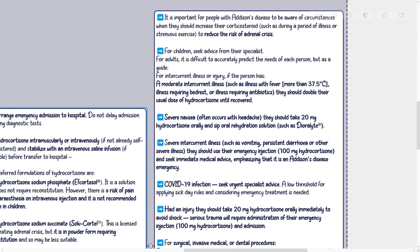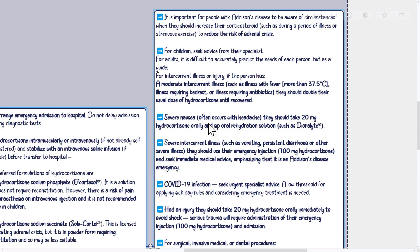For children, seek advice from their specialist. For adults, as a guide for intercurrent illness or injury: if the person has a moderate intercurrent illness — such as illness with fever above 37.5°C, illness requiring bed rest, or illness requiring antibiotics — they should double their usual dose of hydrocortisone until recovered. For severe nausea (often with headache), take 20 mg hydrocortisone orally and sip oral rehydration solution such as dioralyte. For severe intercurrent illness such as vomiting, persistent diarrhea, or other severe illness, use the emergency injection of 100 mg hydrocortisone and seek immediate medical advice, emphasizing that it is an Addison's disease emergency. For COVID-19 infection, seek urgent specialist advice, with a low threshold for applying sick day rules.